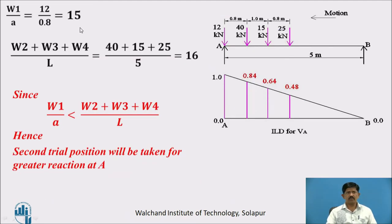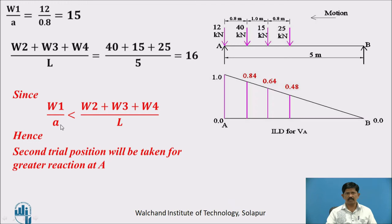We now check the condition: wheel load rolled off / succeeding wheel spacing must be greater than sum of remaining loads / span. W1/a = 12/0.8 = 15, and (W2 + W3 + W4)/L = (40 + 15 + 25)/5 = 16. Since W1/a is less than the remaining load ratio, we need to proceed to the second trial.